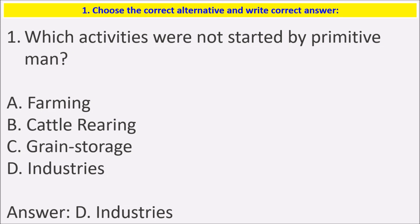Which two activities were not started by primitive man? Because for active industries, there were many things — they did not have that knowledge. Those people did farming, cattle rearing, and grain storage.